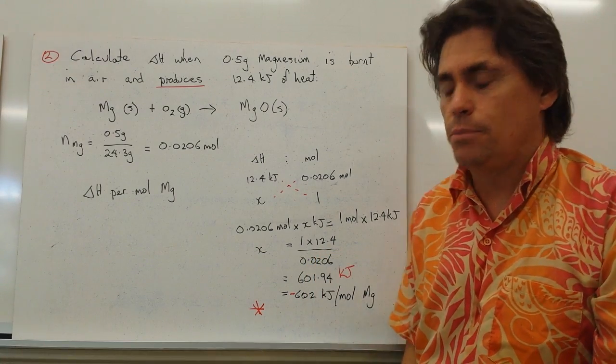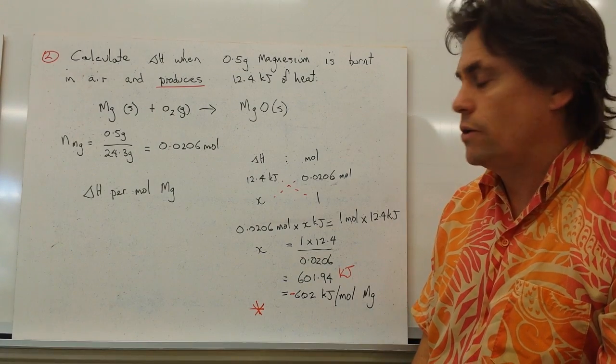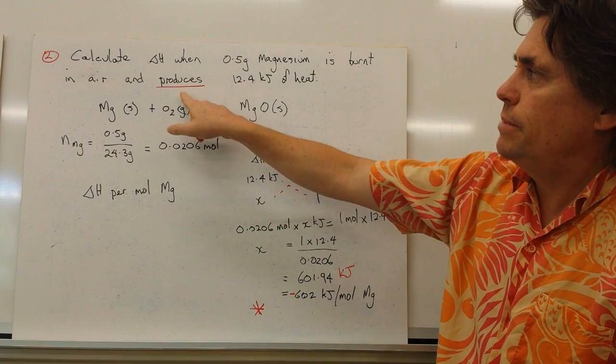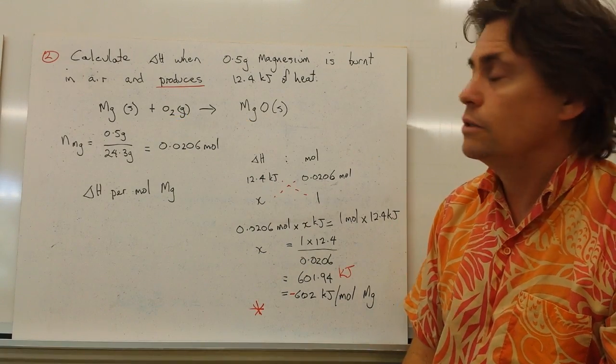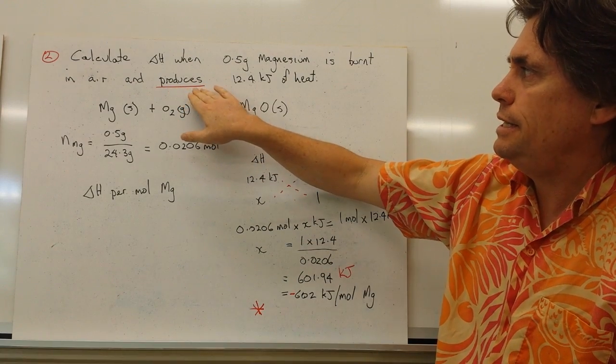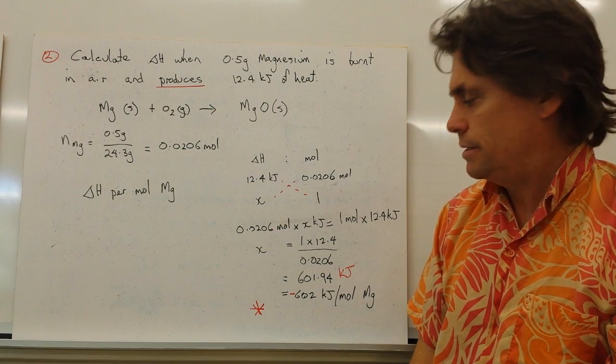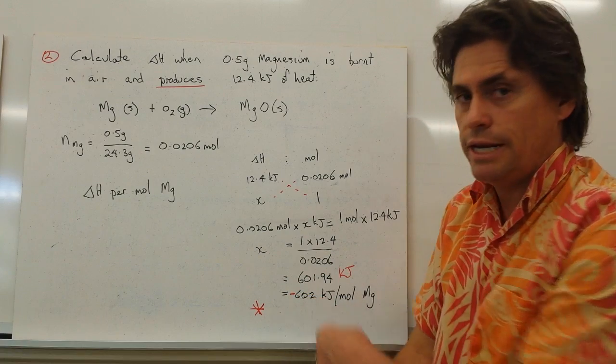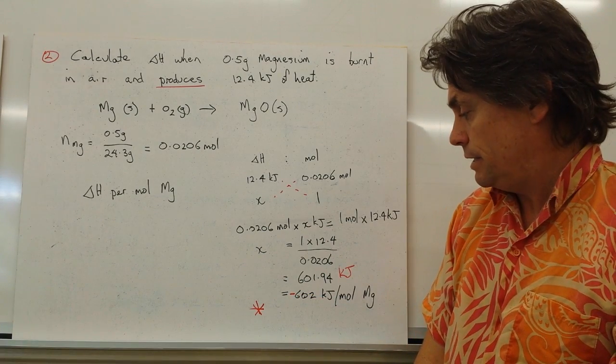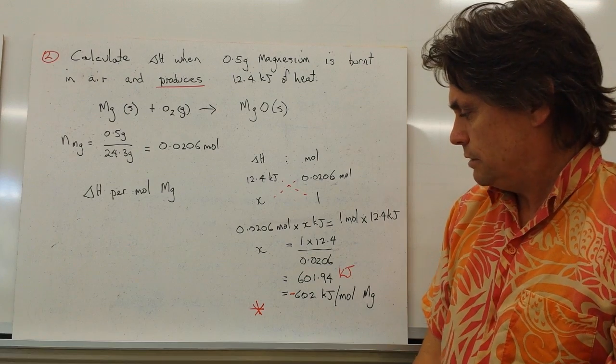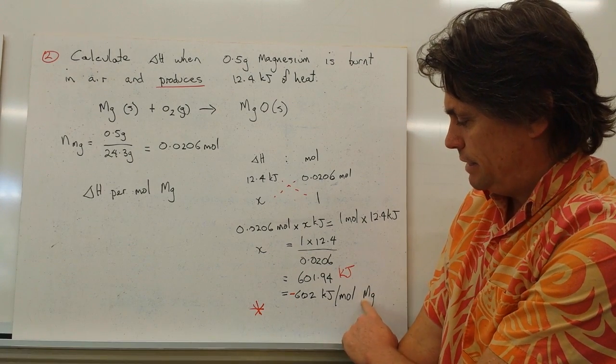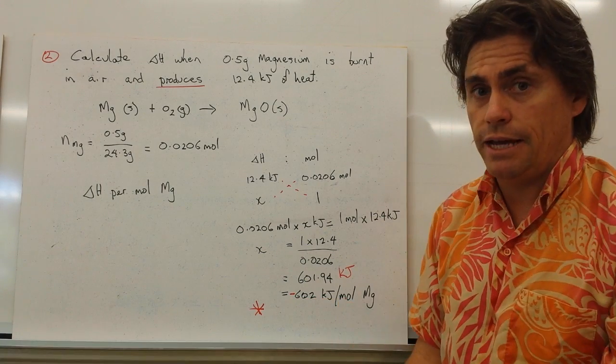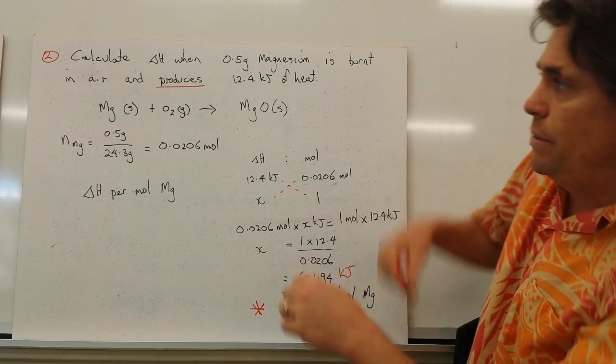The last step that we need to put down is whether this value indicates that we've got an exothermic or endothermic reaction. And to determine that, we need to go back to the wording in our question. In this case, it said it produced heat, therefore it's giving heat out to the environment. So in this case, our reaction is an exothermic reaction, so we need to put a negative value for the delta H value. So our final step says, per mole of magnesium, we have negative 602 kilojoules of heat given out when we combust the magnesium.